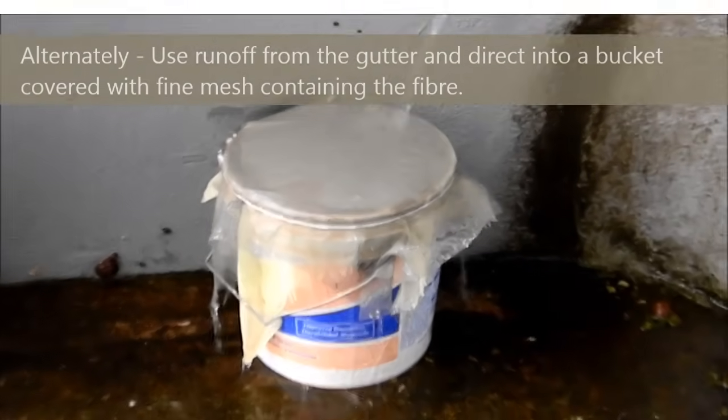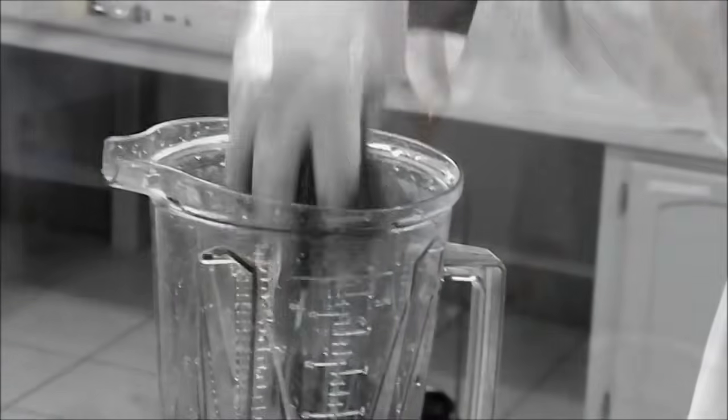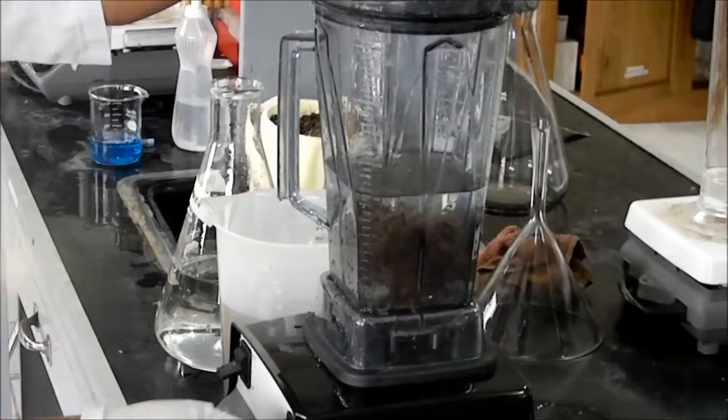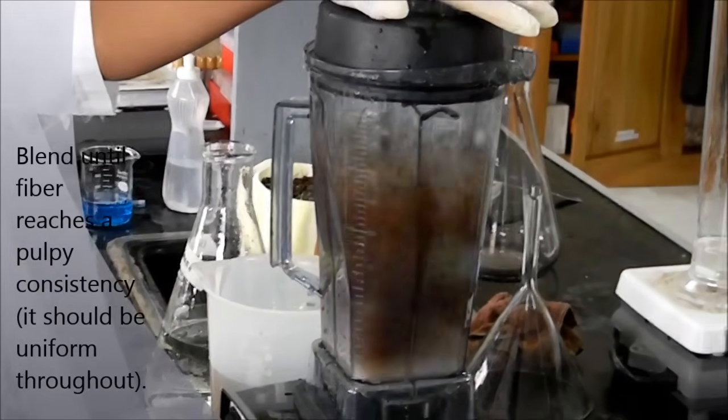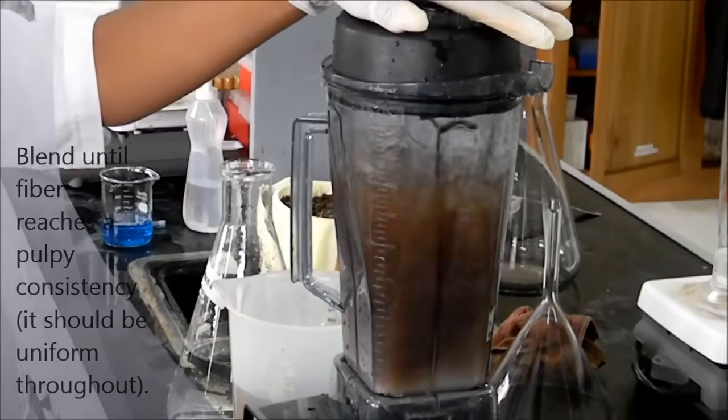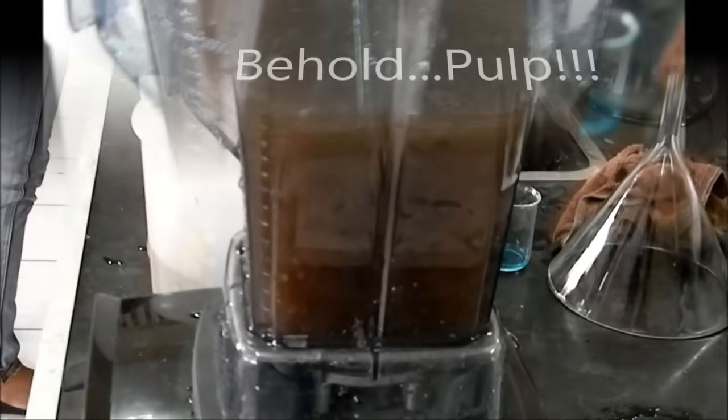Next you take those fibers, you put about a handful of them in a blender with about 600 ml of water. And you blend them for maybe a minute or less until they become pulp. Depending on the type of fiber, you might need more or less.